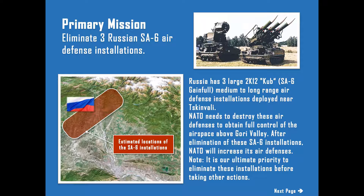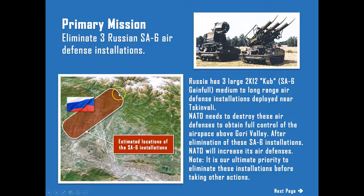For the primary mission, within the indicated zone you'll find SA-6 installations that need to be eliminated. Be aware that these SA-6 installations do not have a fixed position — they will vary mission by mission and won't be activated all the time, so you really need to search for them.